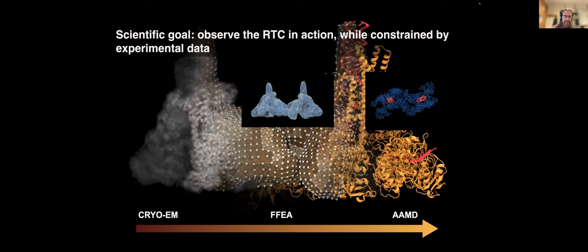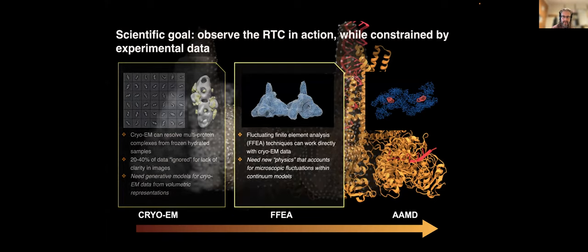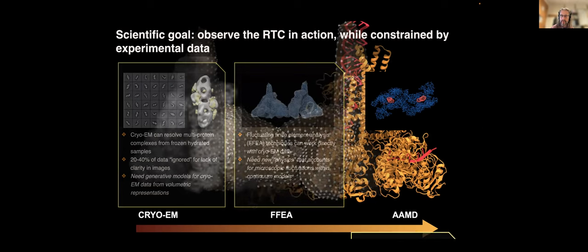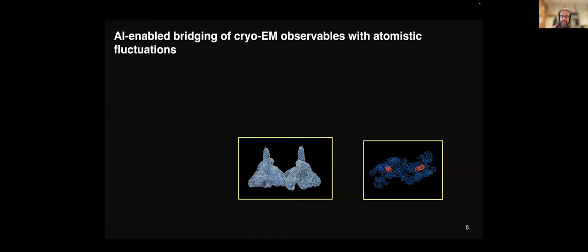And so this involved multiple levels of modeling where we started with cryo EM data, and then we used an intermediate continuum model called fluctuating finite element analysis to try and resolve these rather low resolution cryo EM images into something that we could then run with all atom molecular dynamics. And so in order to drive this and make it even faster, we used an AI steering workflow.